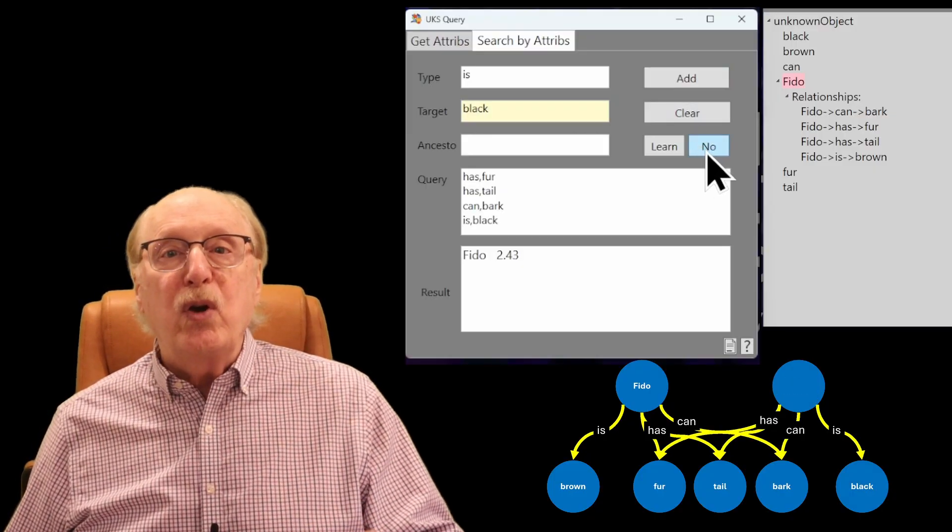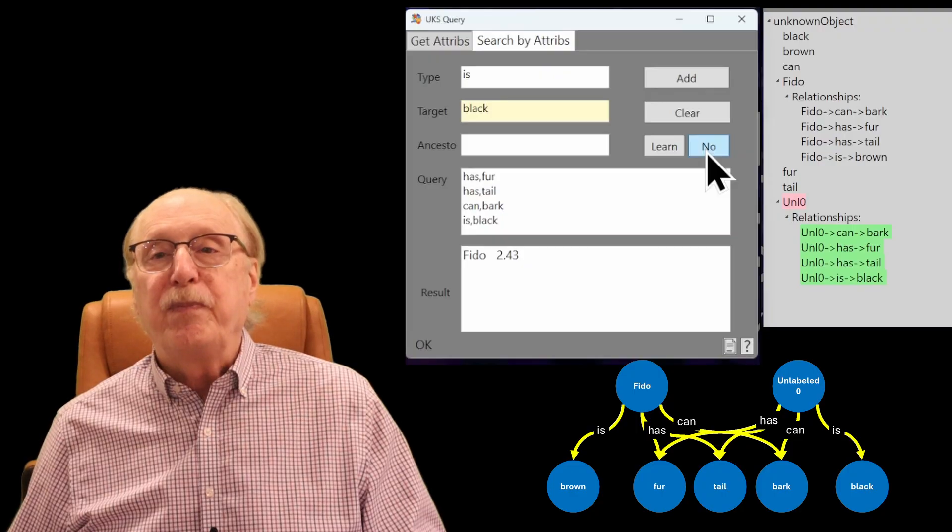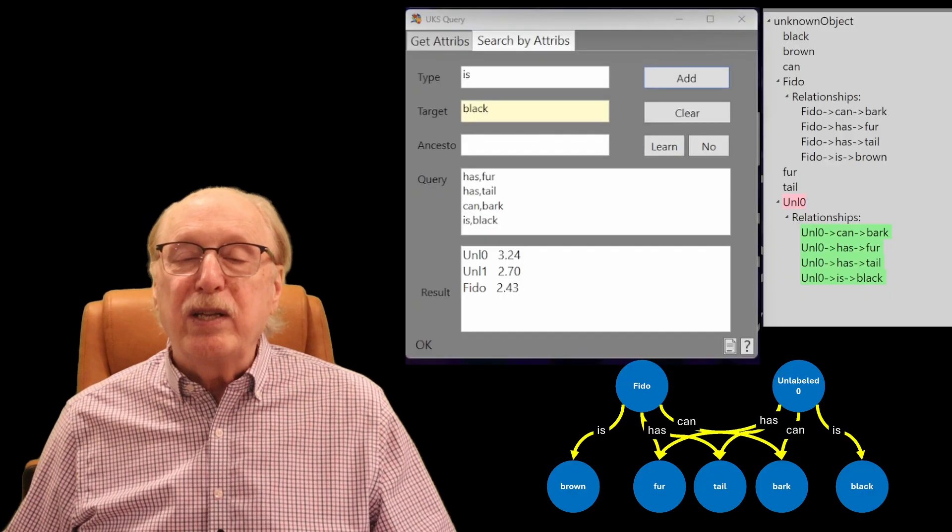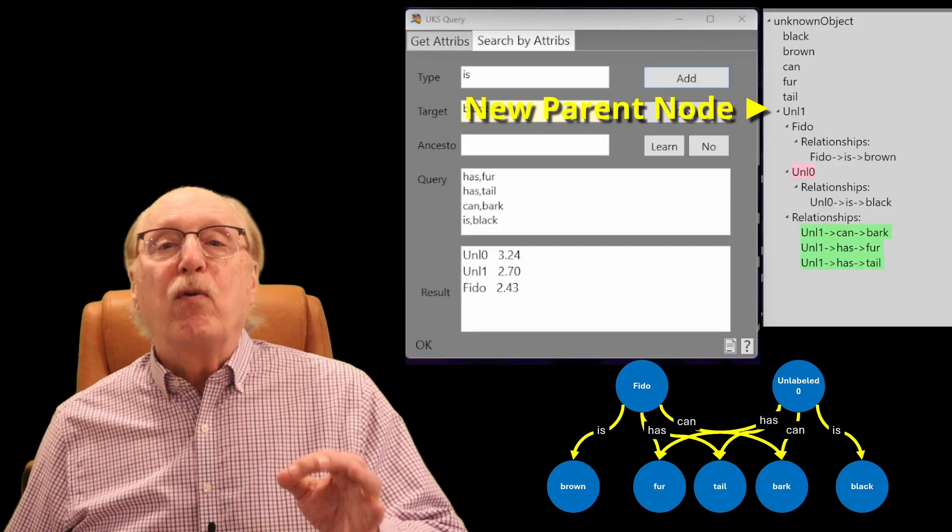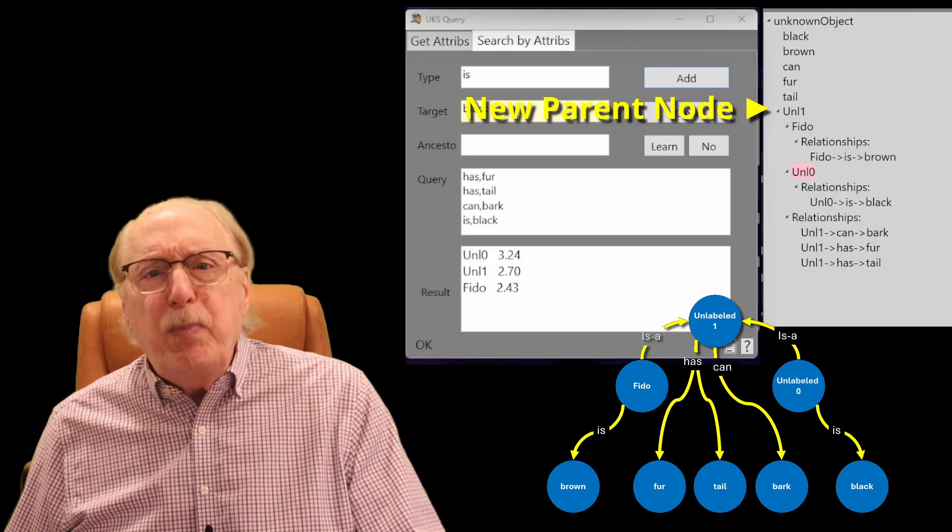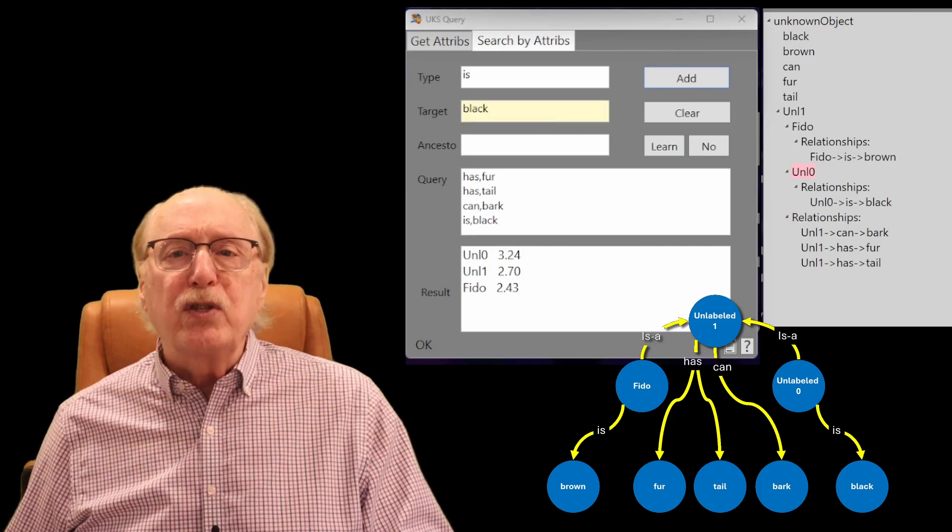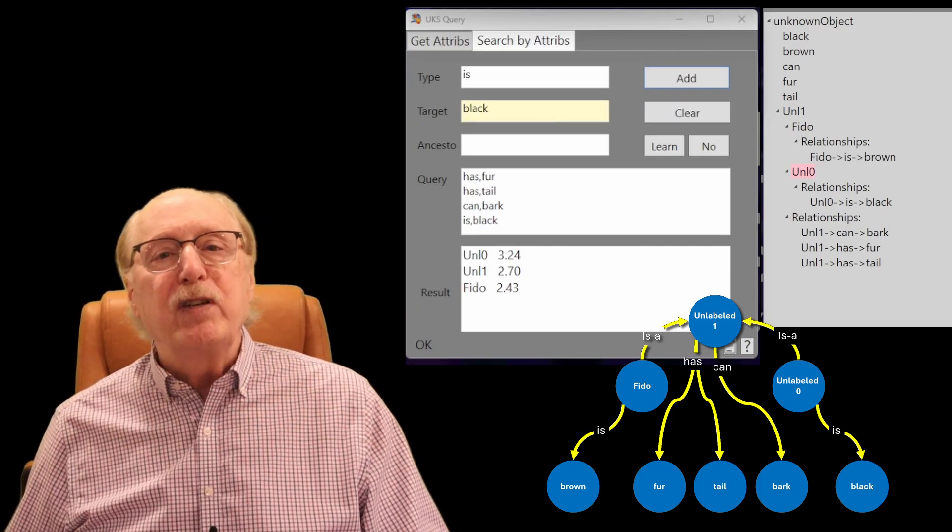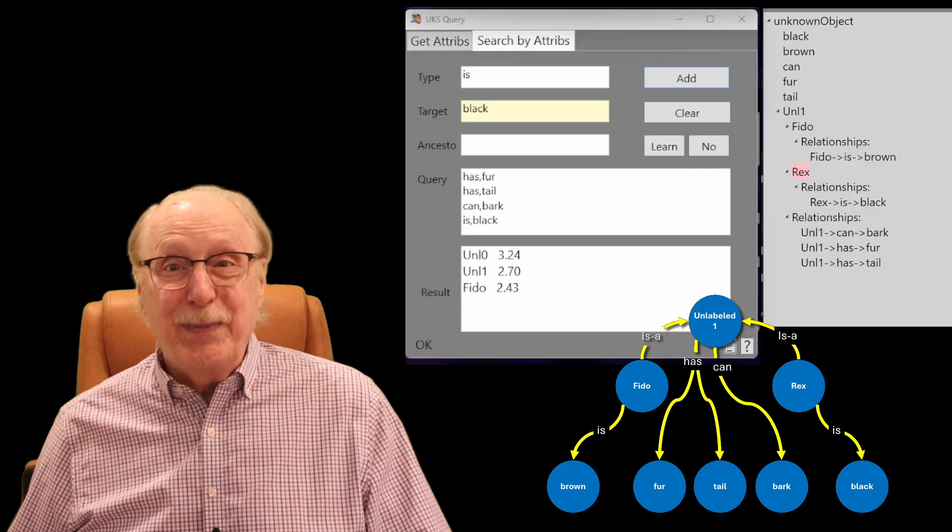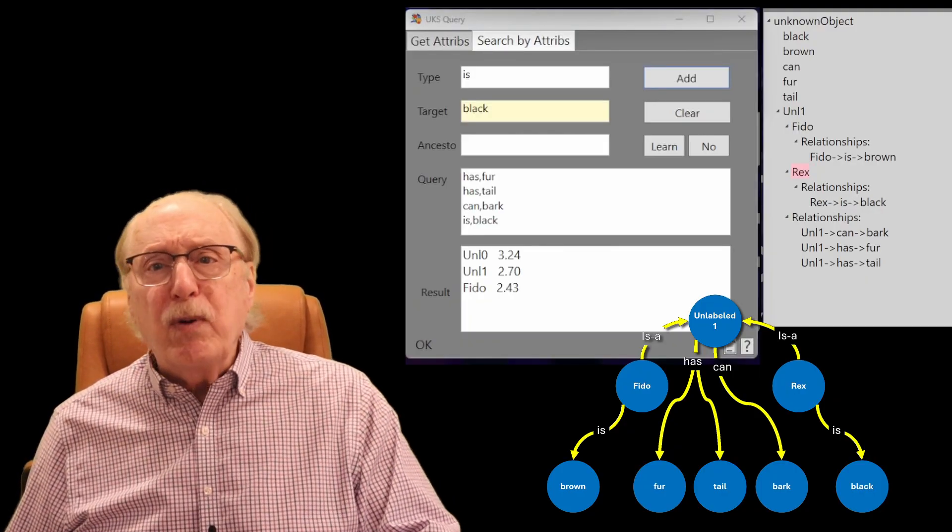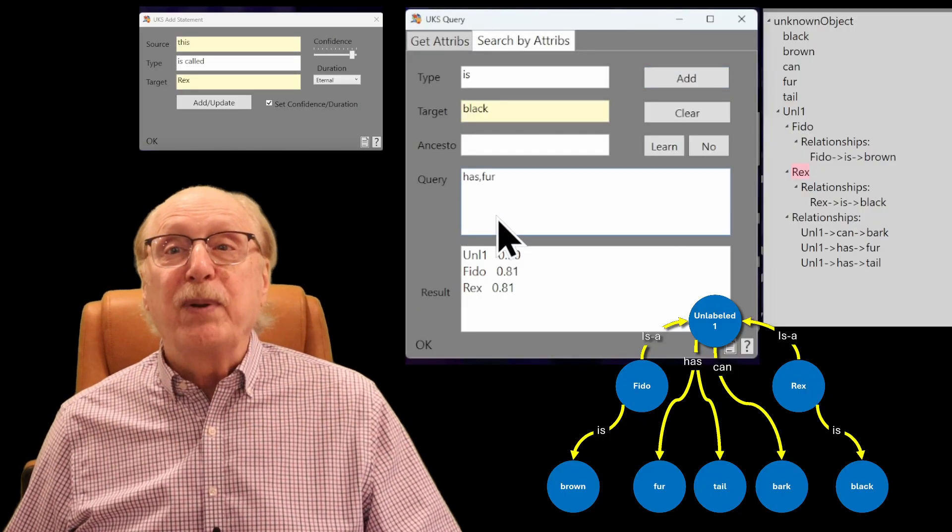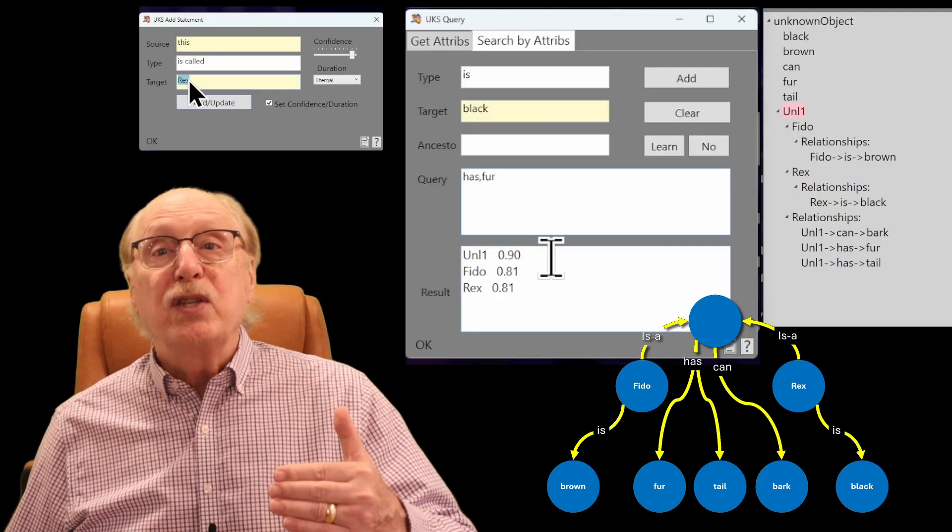In response, the system creates a new node to represent the new set of attributes. But it also notices that several attributes are common between the two nodes: fur, tail, and barks. And it forms a new parent node to hold these common features. The shared attributes bubble up to this parent, leaving the distinguishing features, is brown and is black, at the individual level. We can now label the new node Rex by saying, this is called Rex. To label the parent node, we need to perform a search with attributes which are unique to that node. So searching for just fur will highlight the parent node so we can say, this is called dog.